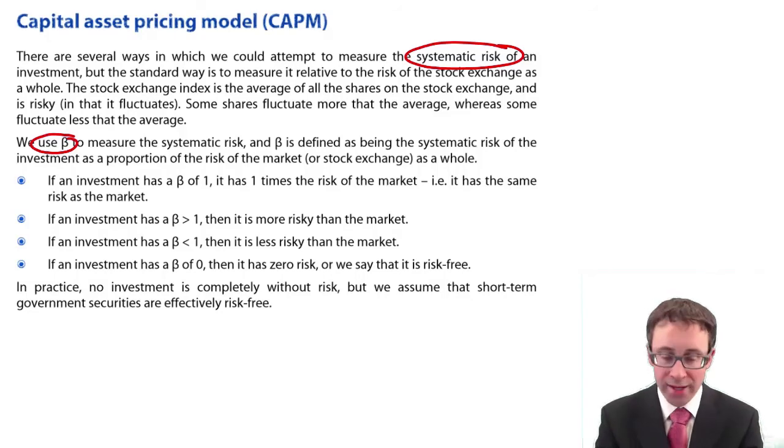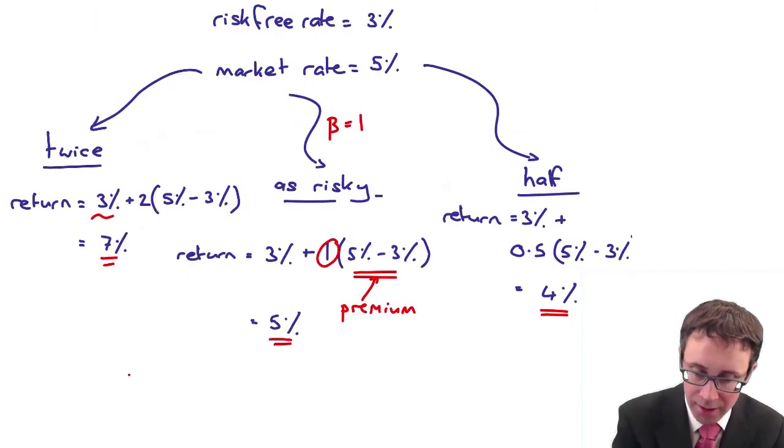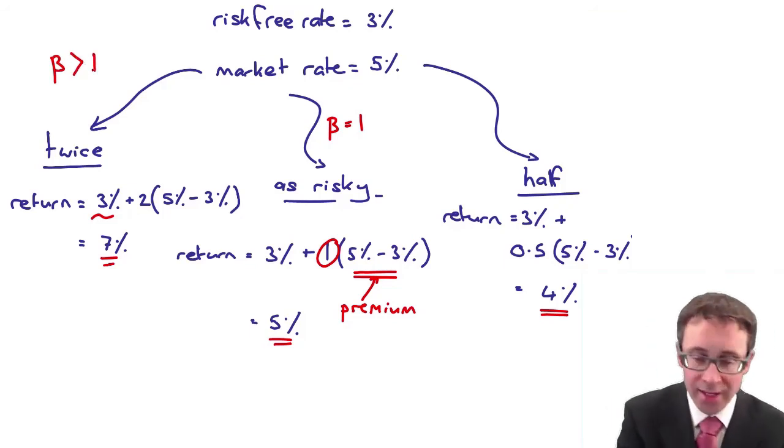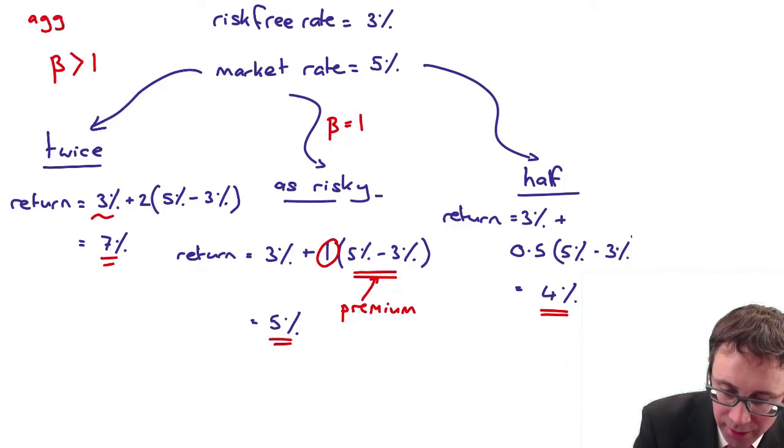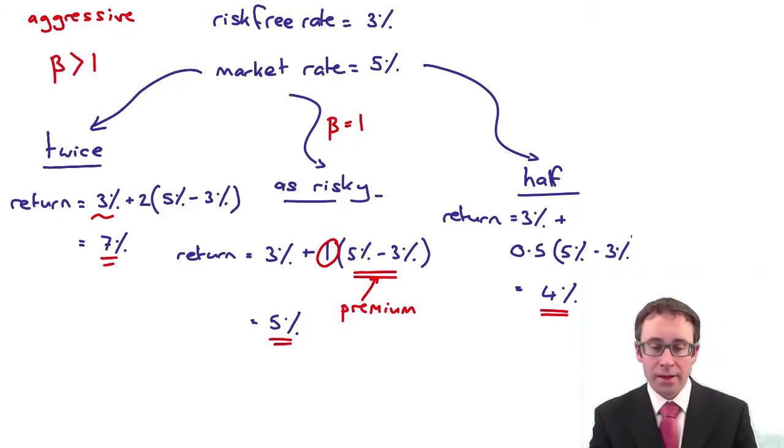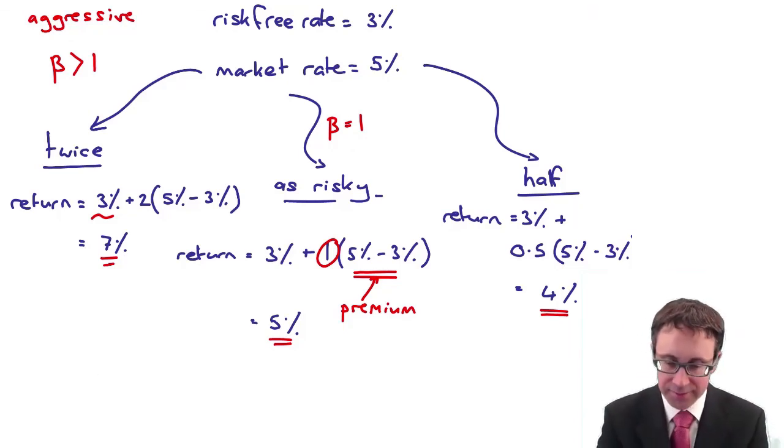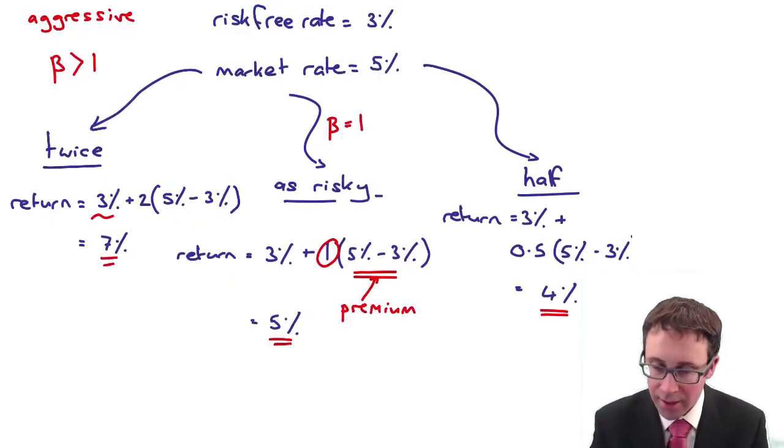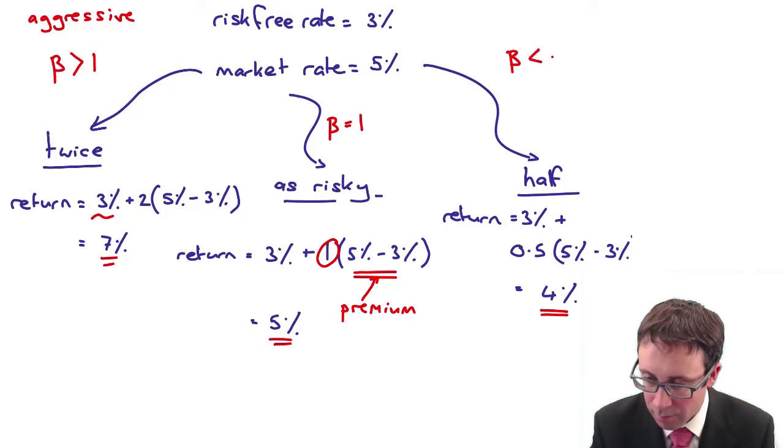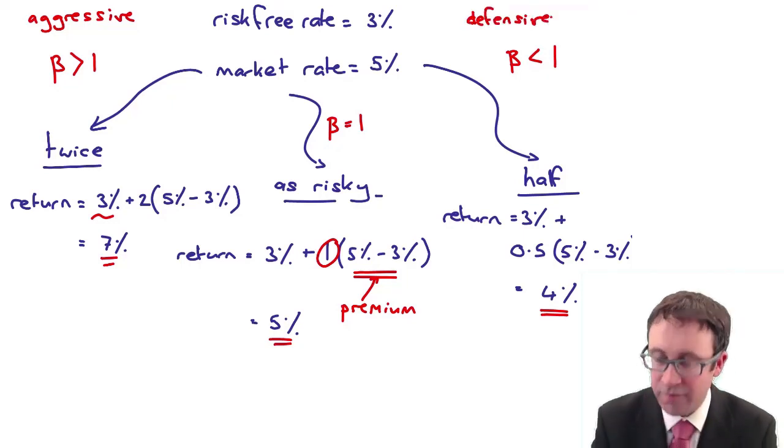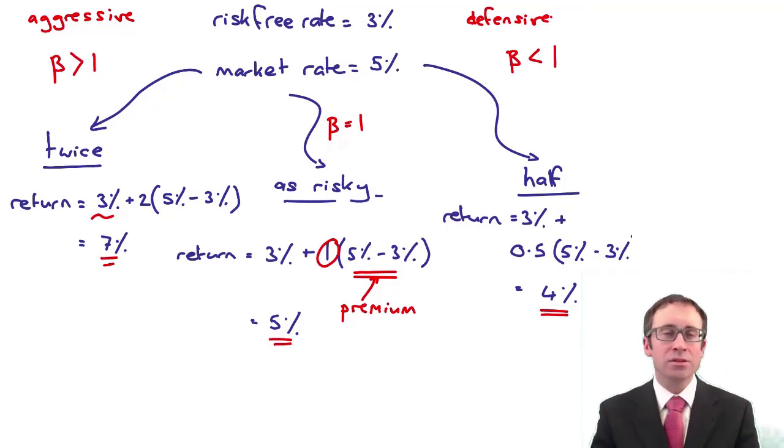If an investment has a beta greater than one, then it is more risky than the market. So here, that's where beta is greater than one, that is sometimes referred to as an aggressive investment. And then if beta is less than one, then it is less risky than the market.